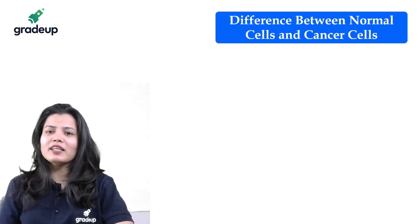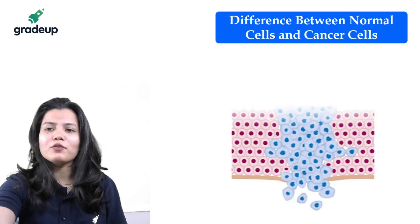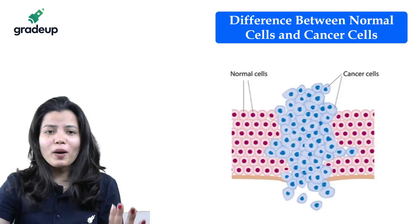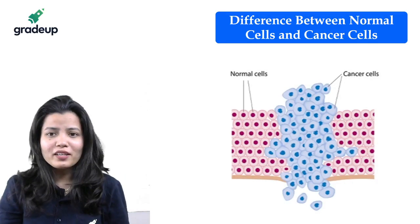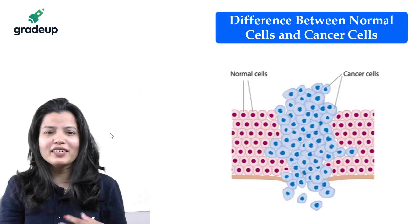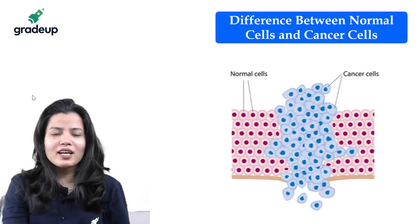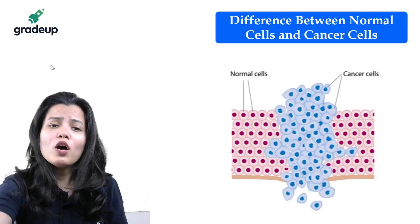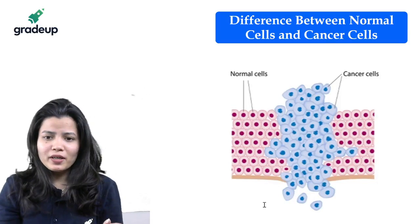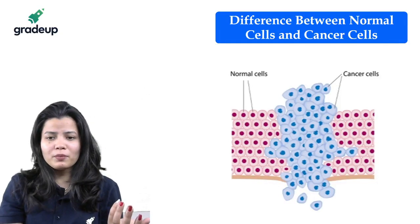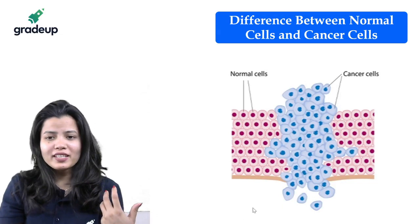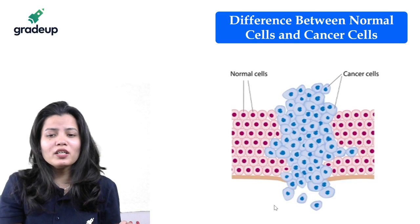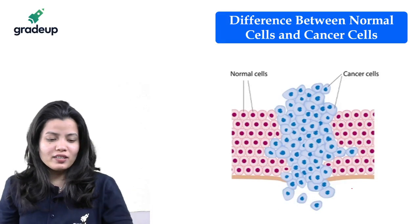As you can see in the image, there are normal cells versus cancer cells. The cancer cells are dividing in a very uncontrolled manner. There are various treatments which are basically given to the cancer patient, and some of these are discussed here.